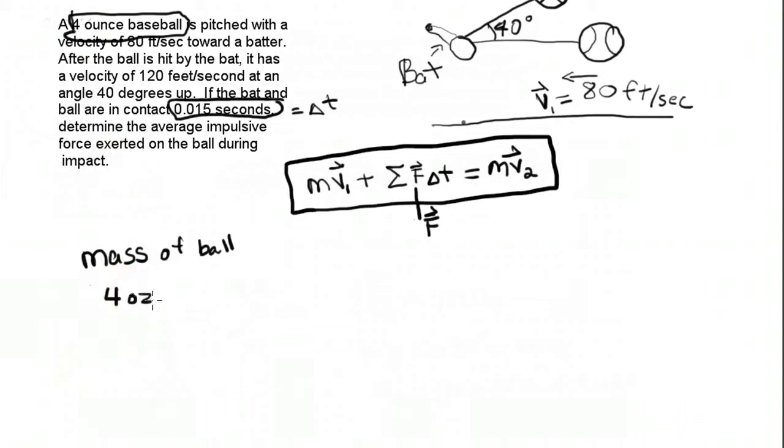So 4 ounces, what's the mass? Well, 4 ounces is a weight. Let's get that into pounds first. An ounce, or 16 ounces in a pound, so that's 4 sixteenths of a pound. That's the weight of the ball.